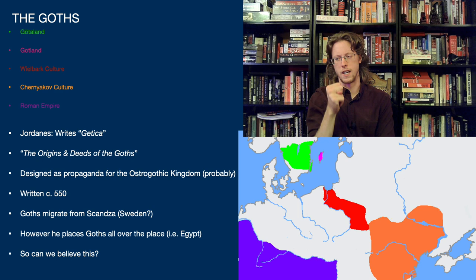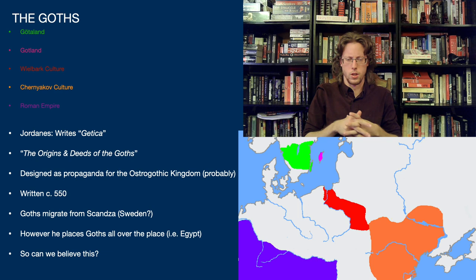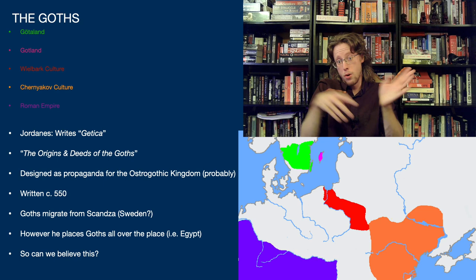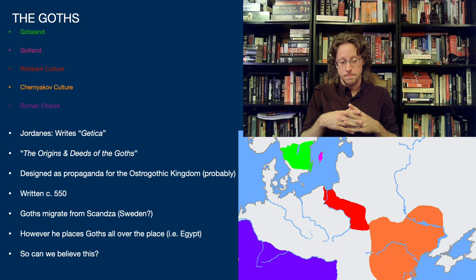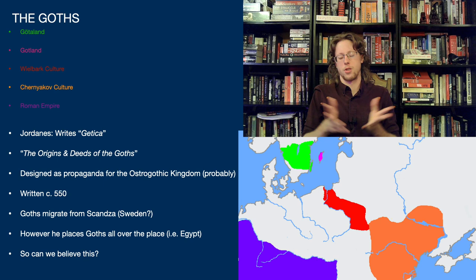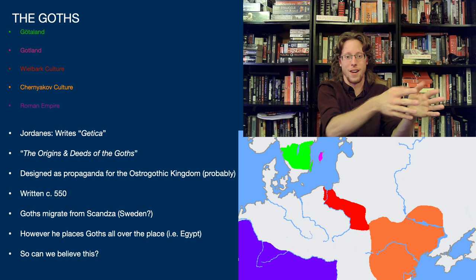The Getica is written as propaganda to help beef up the ruling Amal dynasty of the Ostrogoths. Jordanes does this by claiming a glorious history of migration from up north — a place called Gothaskanza, probably the Baltic coast of Poland and Sweden. He says the Goths moved south from there, and there's nothing inherently wrong with taking that as a fact. The problem, though, is that the origins and deeds of the Goths, in order to establish a glorious, legitimate dynasty, places the Goths all over history — he says they fought with the pharaohs in Egypt and all this other stuff. So he's clearly fabricating some things, and the problem then becomes: how do we figure out what's fact and what's fabricated? It's really hard to do.